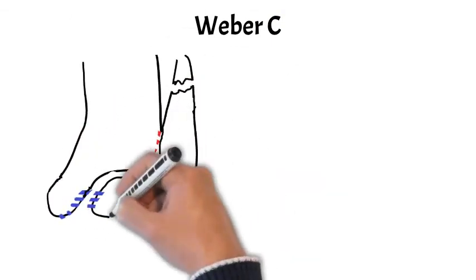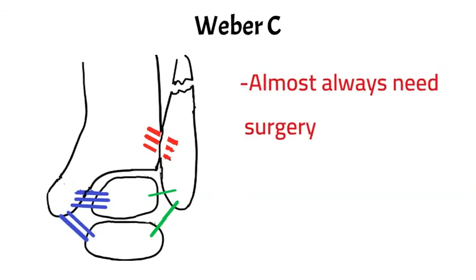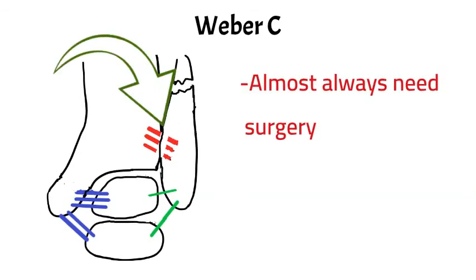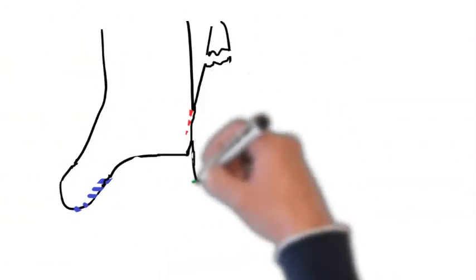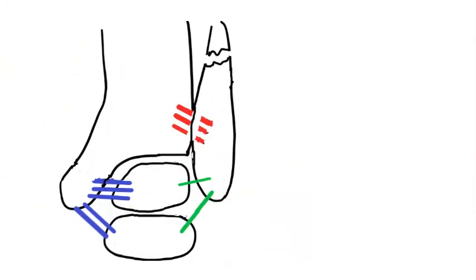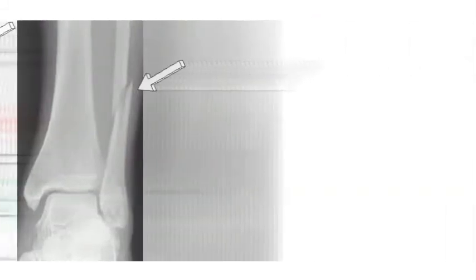A Weber C fracture occurs above the level of the syndesmosis — above those red lines. Unfortunately, these almost always need surgery because the syndesmosis is almost always broken with these fractures, unless you suffered a direct blow to the leg. If it's a direct blow, it's just a fracture with no syndesmosis issues. But if the injury was caused by twisting, the syndesmosis is gone. This is what it looks like on an x-ray, marked out in the drawing and on the x-ray — unfortunately, these will need surgery.